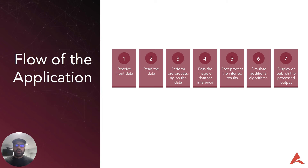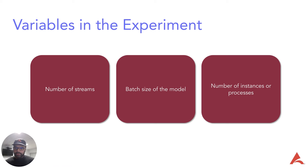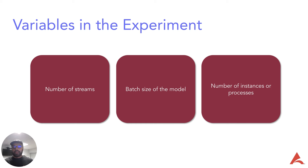Step seven: display the results or produce some form of output — publishing to cloud, saving to the device, or writing results to a log file. The variables in the experiments were: number of streams, batch size of the model, and number of instances or processes. By varying these three, we get different scales of application. A large-scale application may have many streams, and you can handle them by batching or through multi-processing. Multiple experimental configurations were generated based on these variables.